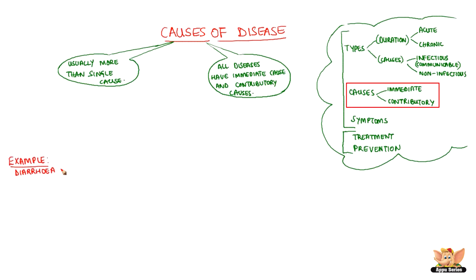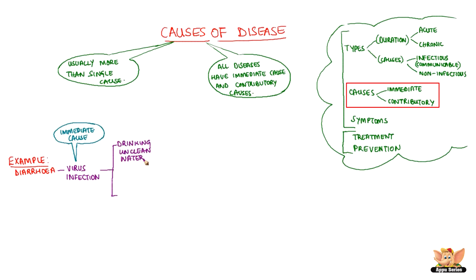Let's take an example of a baby suffering from diarrhea. The cause for diarrhea is a virus infection — this is the immediate cause. How did the virus infection occur? It could be due to drinking dirty water or due to poor health.